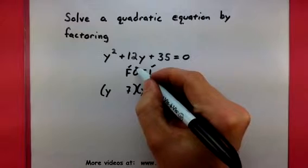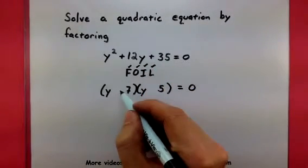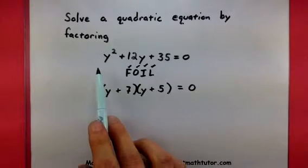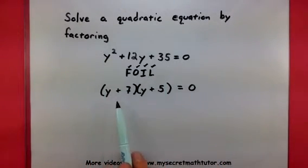So, sure enough, my outside and inside terms check out as well. This means that I have taken my quadratic and factored it properly.